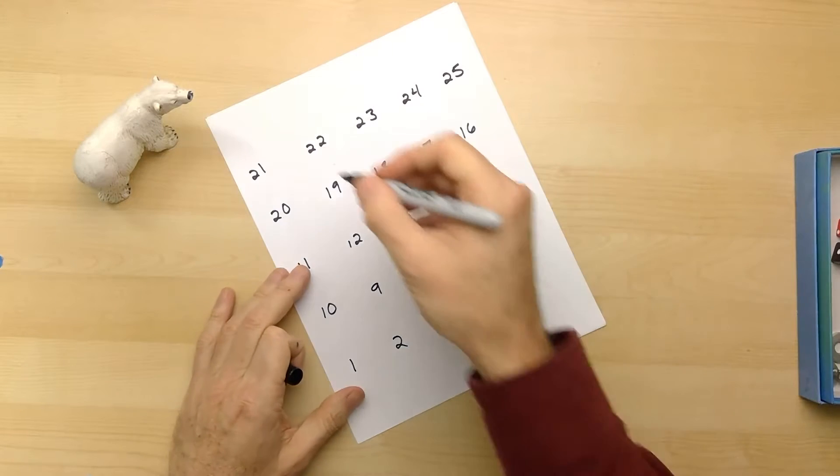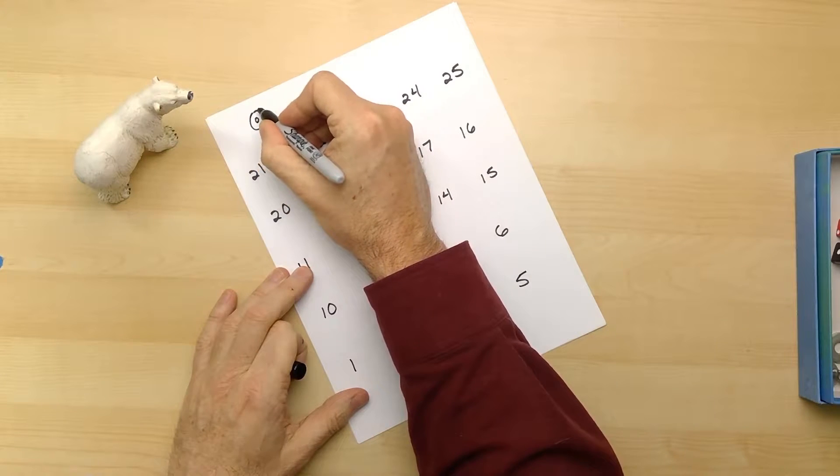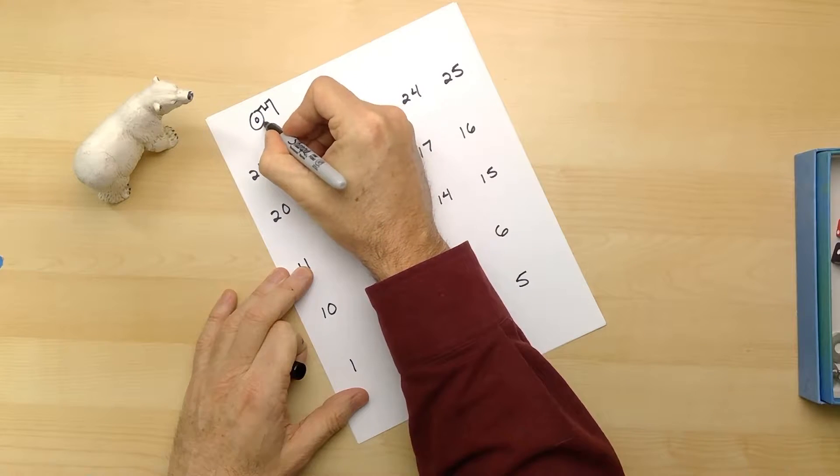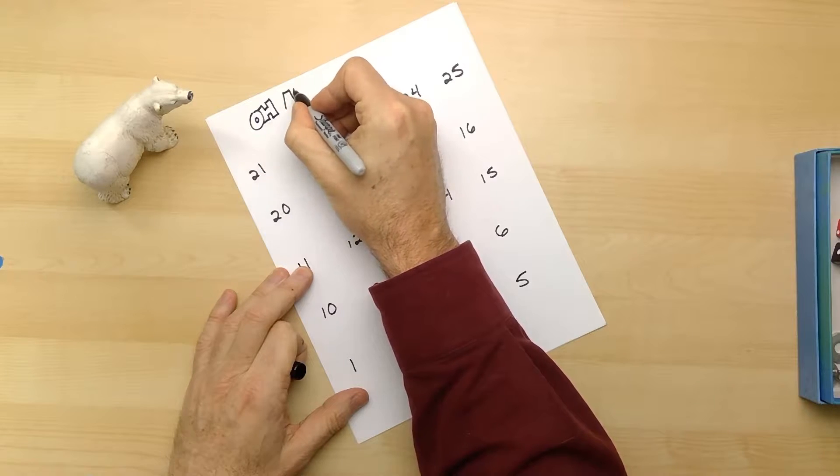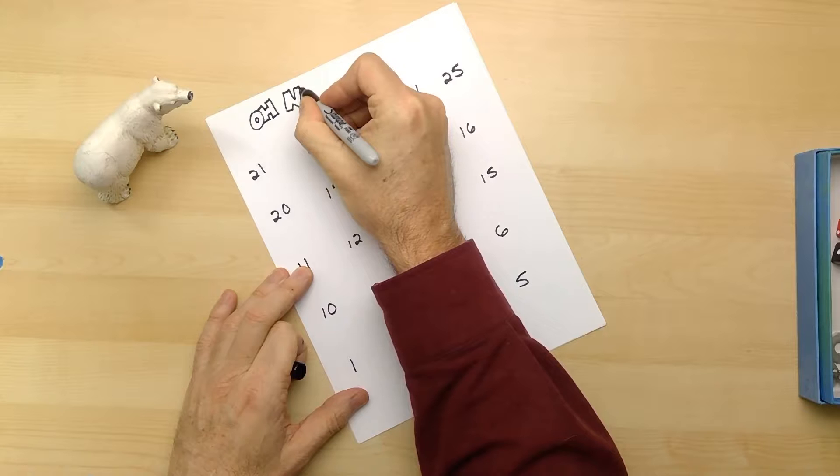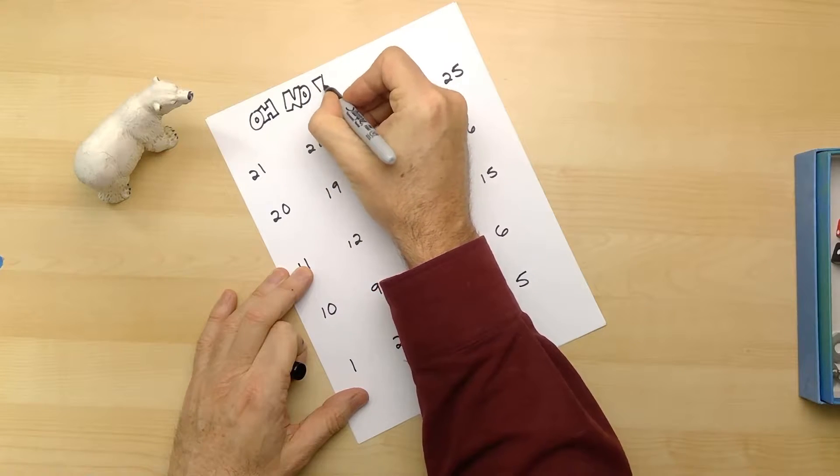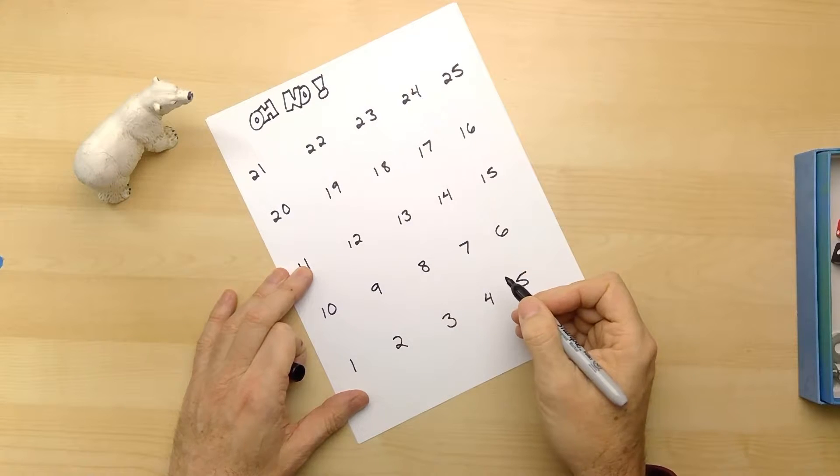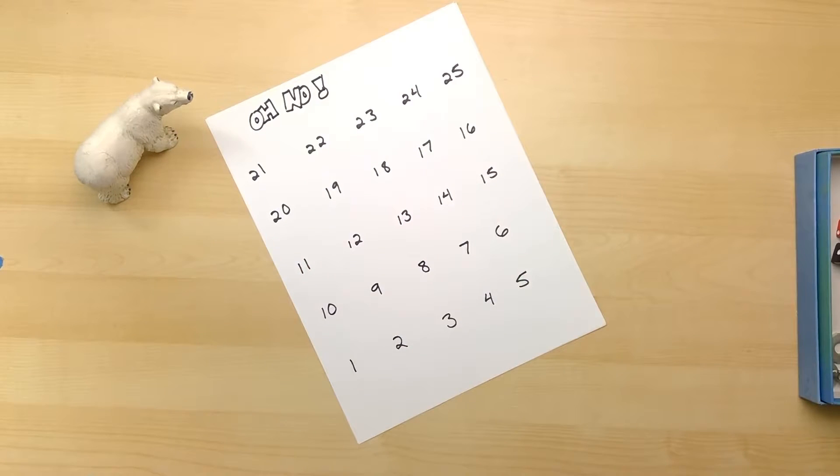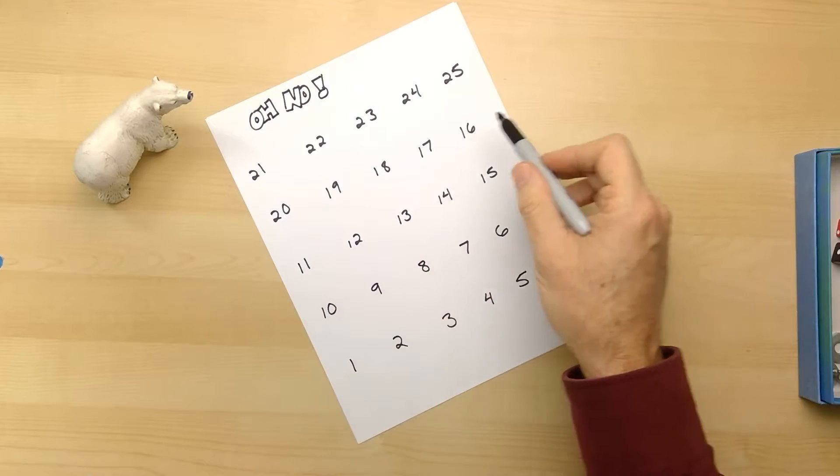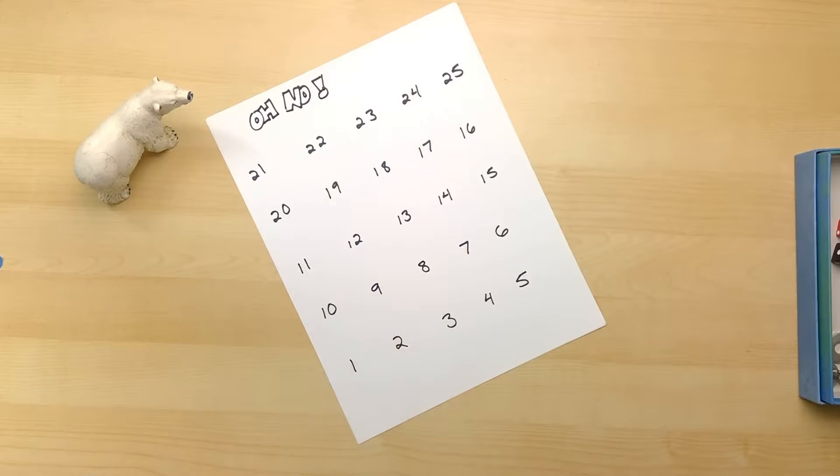So this game is called O No. And it's like chutes and ladders, but we're going to make it even better. So we have the numbers one to twenty-five and in this game we're trying to get from one counting up to twenty-five. Let's make our board game more interesting and then we'll try it out. First off, let's put some good things down. The first thing we want to have is a starting place, so let's go ahead and write down here 'start'.